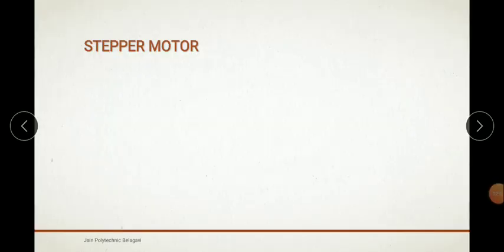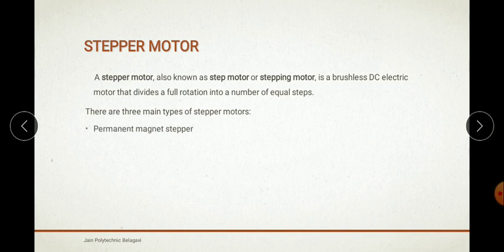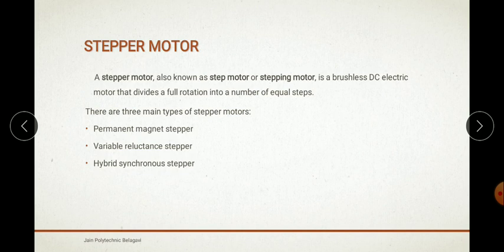Let us begin with the stepper motor. A stepper motor is also known as a step motor or stepping motor, which uses a brushless DC electric motor that divides the full rotation into a number of equal steps. There are basically three types of stepper motor: first, the permanent magnet stepper; second, the variable reluctance stepper; and third, the hybrid synchronous stepper.